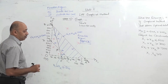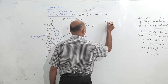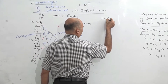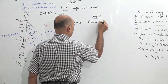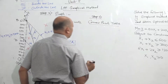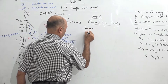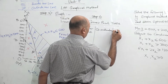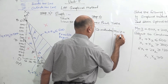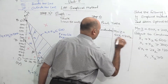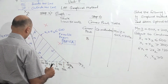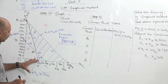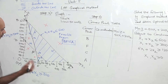Step four is the corner point method, or corner point table. The four corner points are B, F, C, and A. We need to find the coordinates of each corner point, substitute them into the objective function to find the value of Z, and from that we will get our optimal solution.